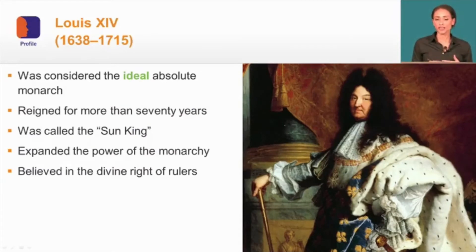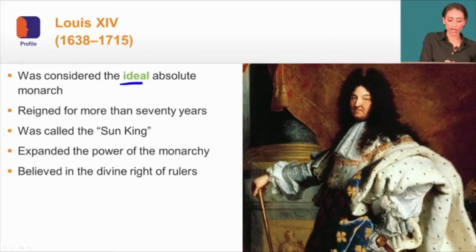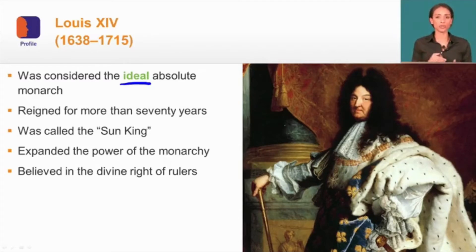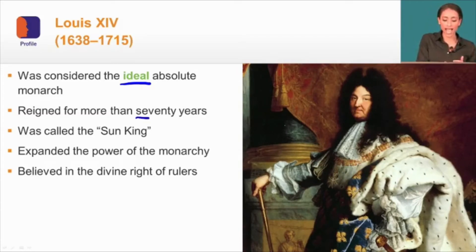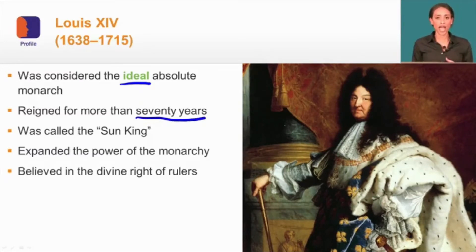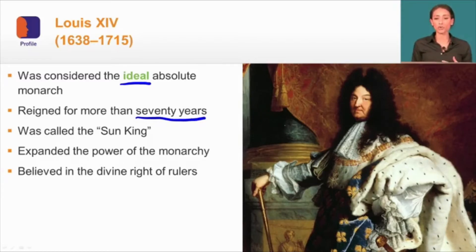Louis XIV is, by many historians, considered the ideal absolute monarch, because he exemplifies many characteristics specific to absolute rule. He reigns for more than 70 years, having taken the throne at age five when his father died. Because of his young age, Mazarin led the country on his behalf until Mazarin died in 1661, at which point Louis, at the age of 23, took the throne fully on his own.